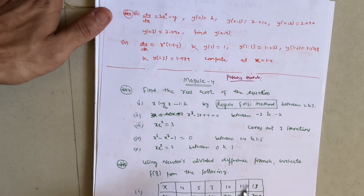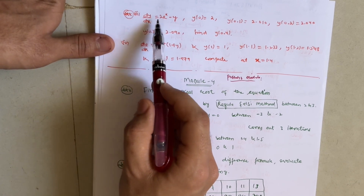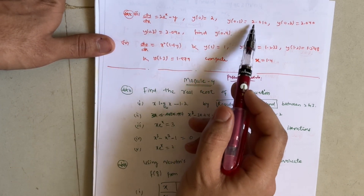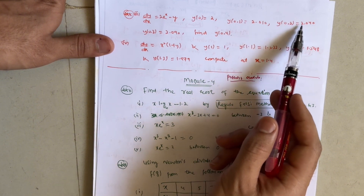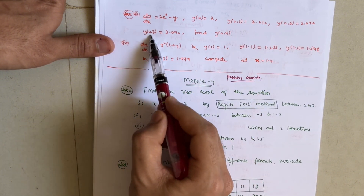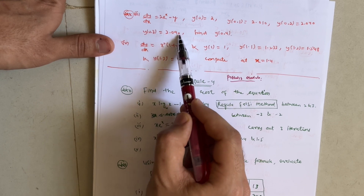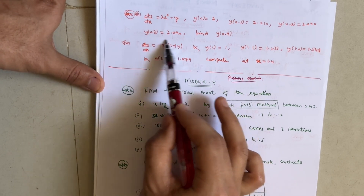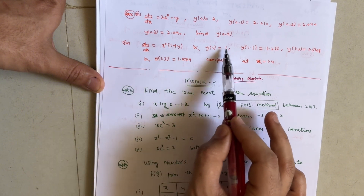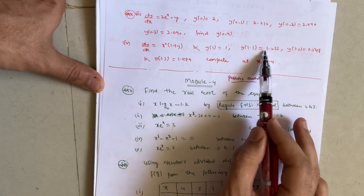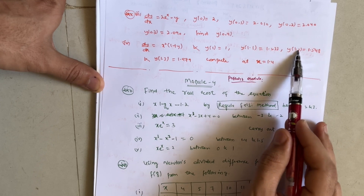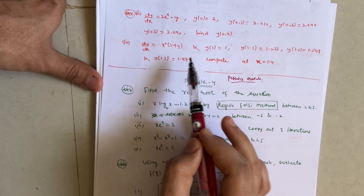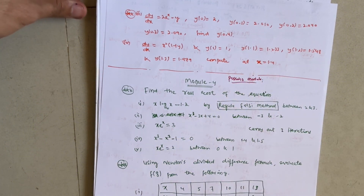Two more Milne's method questions: dy/dx = eˣ − y, y(0) = 2, y(0.1) = 0.010, y(0.2) = 0.040, y(0.3) = 2.090 — find y at 0.4. Next, dy/dx = x²y(1 + y), y(1) = 1, y(1.1) = 1.233, y(1.2) = 1.548, y(1.3) = 1.979 — compute y at x = 1.4 using Milne's method.